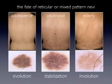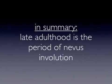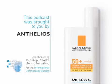So in other words, reticular nevi, in contrast to persisting globular nevi, seem to disappear and involute throughout lifetime. Accordingly, late adulthood is the period of nevus involution.